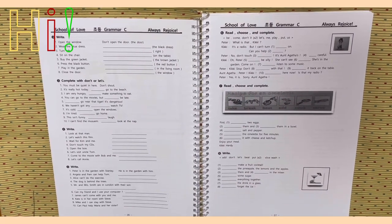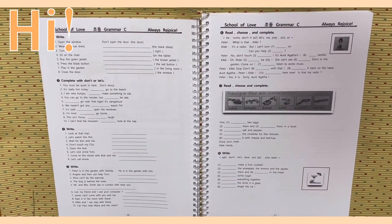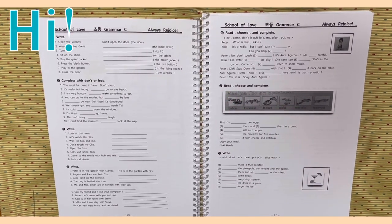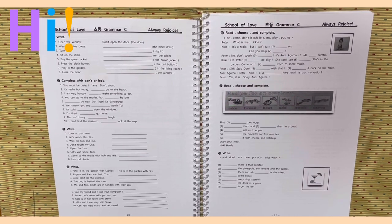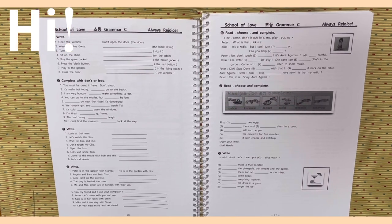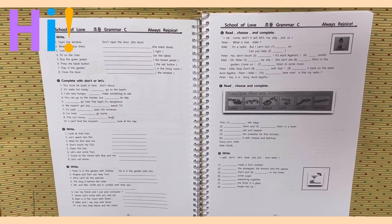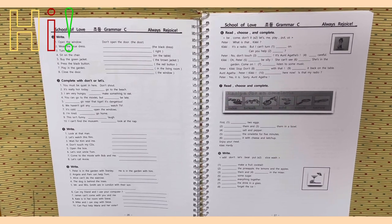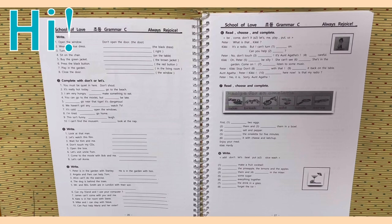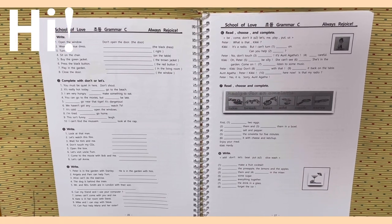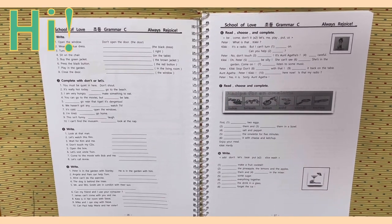Activity 6. Read, choose, and complete. What's that, Kiki? It's a radio. But I can't turn blank on. Can you help blank? No, don't touch blank. It's Aunt Agatha's. Blank careful. Oh, Peter. Blank be silly. She can't see blank. She's in the garden. Come on, blank, listen to some music. Kiki, stop. Don't blank with that. Blank it back on the table. Peter? Kiki? Blank here now. Is that my radio? Yes, it is. Sorry, Aunt Agatha.